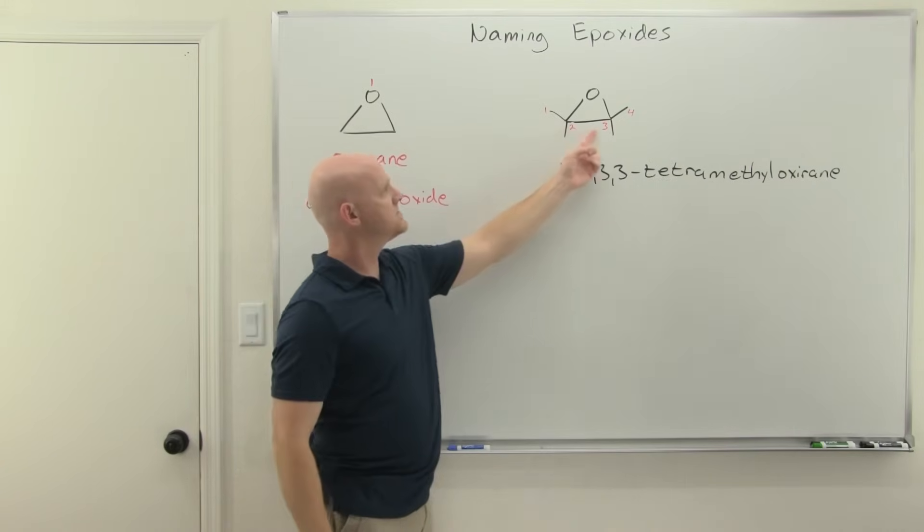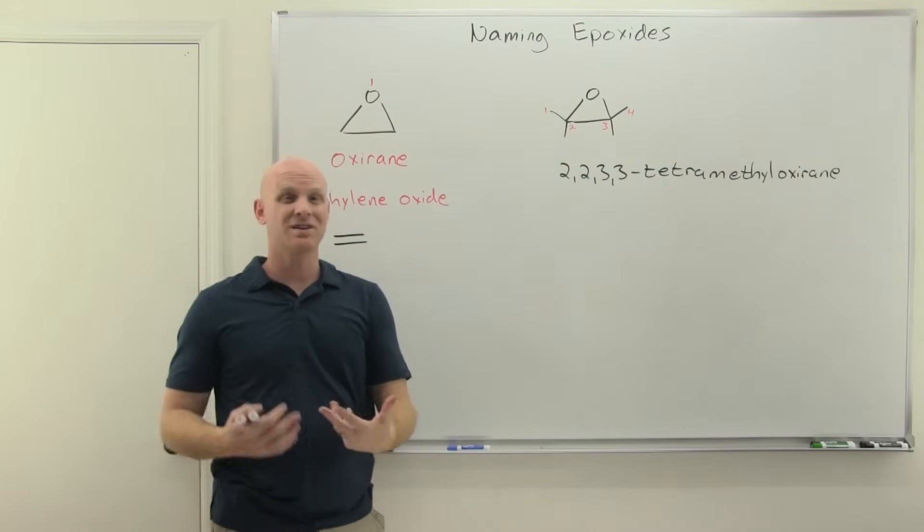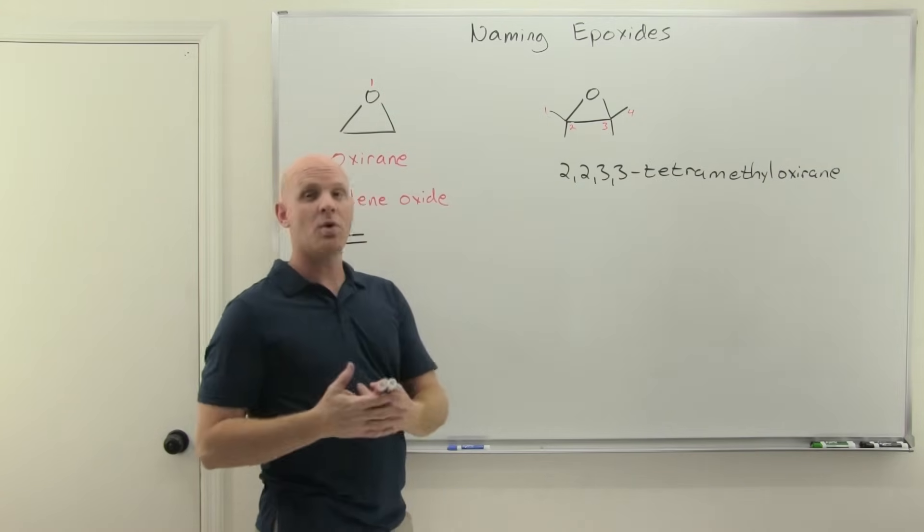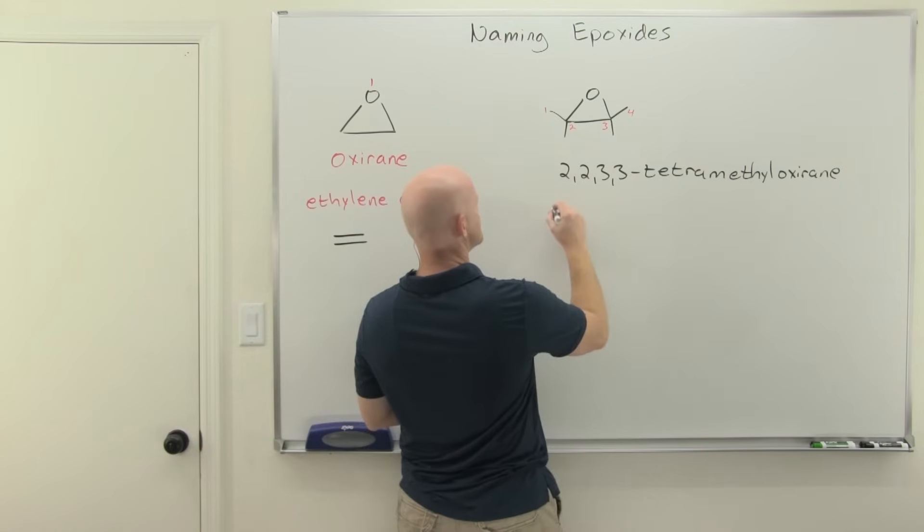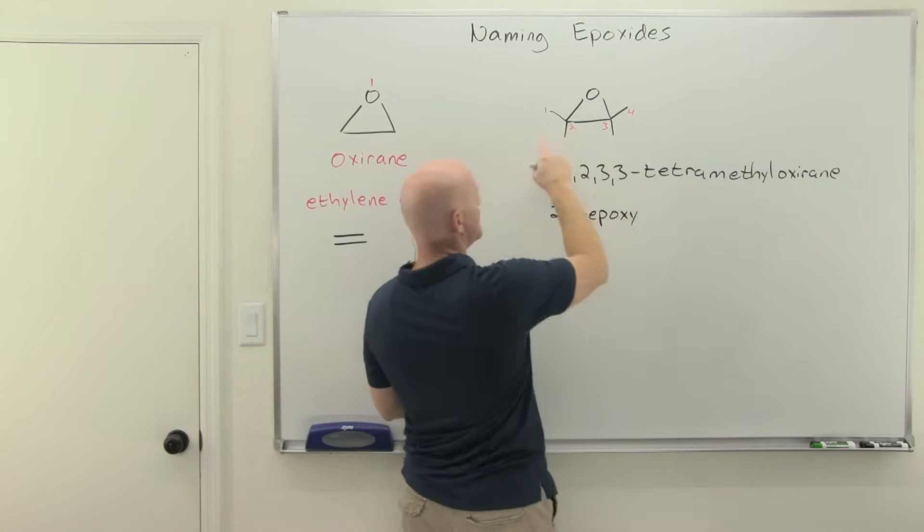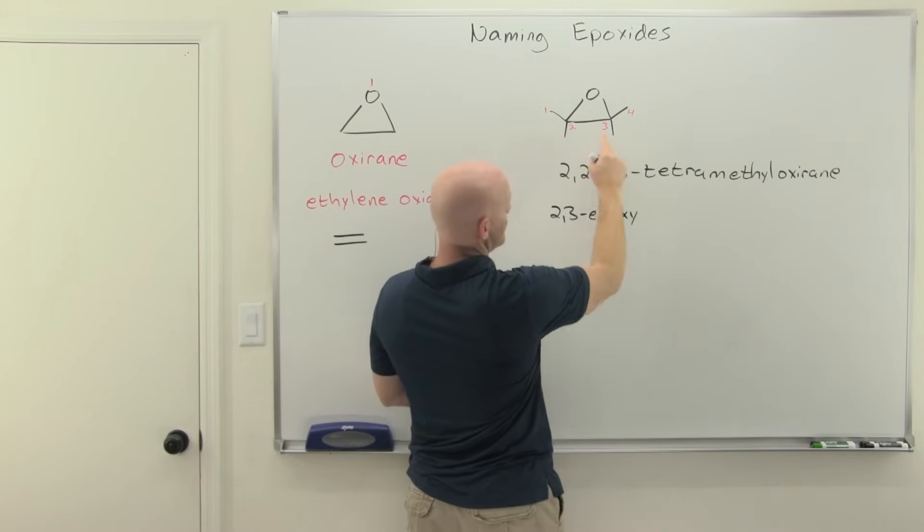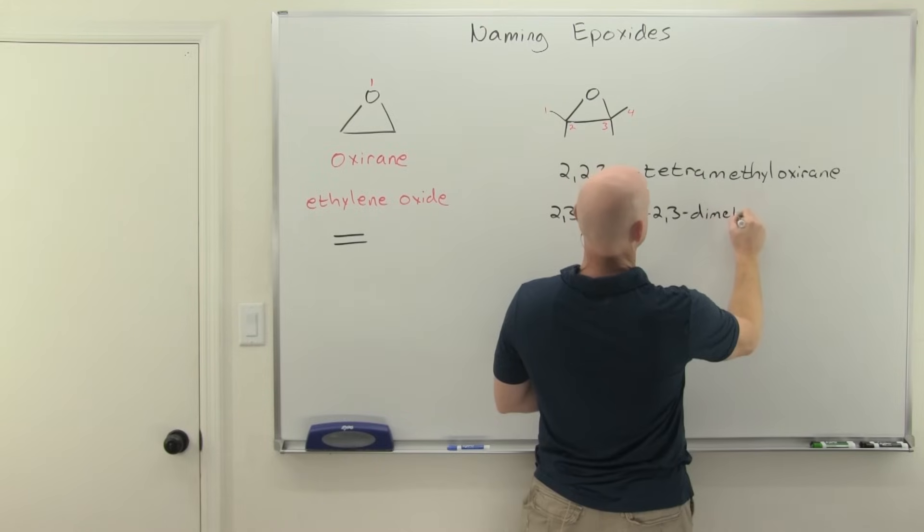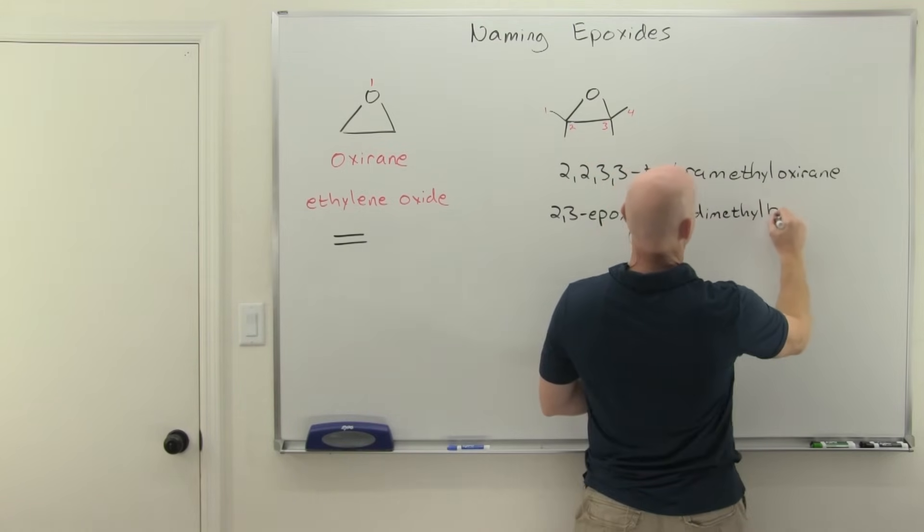And when you number that, you give it a chain locator, you actually give it the two numbers, the two and the three. And so in this case, epoxy comes before methyl alphabetically. So we'll name it first. And so this is going to be 2,3-epoxy-2,3-dimethylbutane.